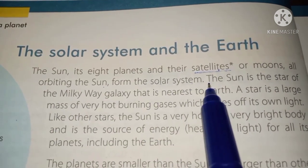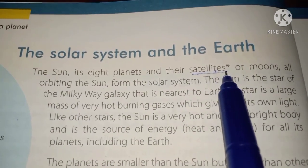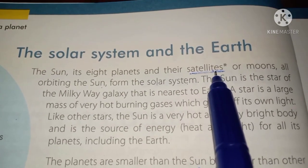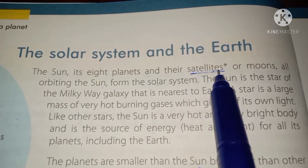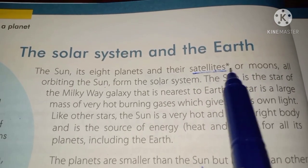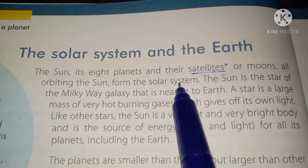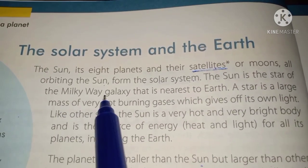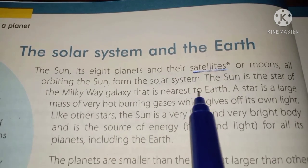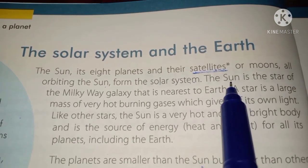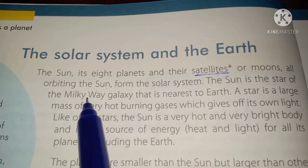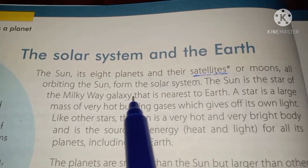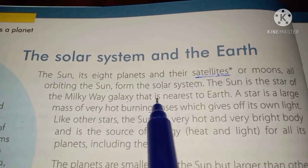Satellites are basically those objects that move around the planets. For example, our earth has a special satellite, which is the moon. These collectively make the system known as the solar system. The sun is the star of the Milky Way galaxy that is nearest to the earth. The Milky Way galaxy basically contains a lot of stars, and our sun is a part of it.